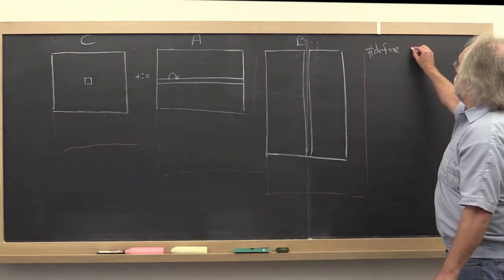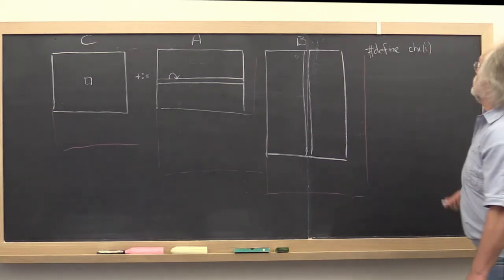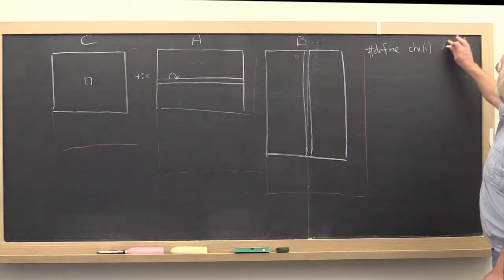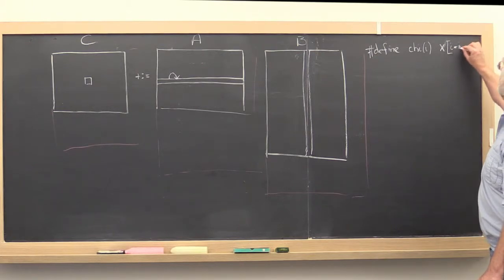The first macro would be chi of i, which would be mapped to the array x evaluated at i times some increment. Let's call that increment incx.